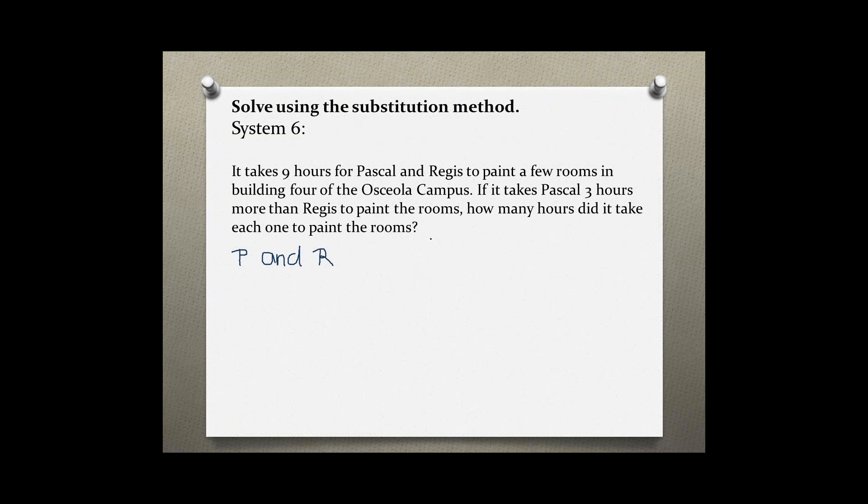Okay, so it says in the first sentence that it took both of them together to paint the rooms in nine hours. So that means P plus R equals nine hours. And then in the second sentence it says that it took Pascal three hours more than Regis to paint the rooms.